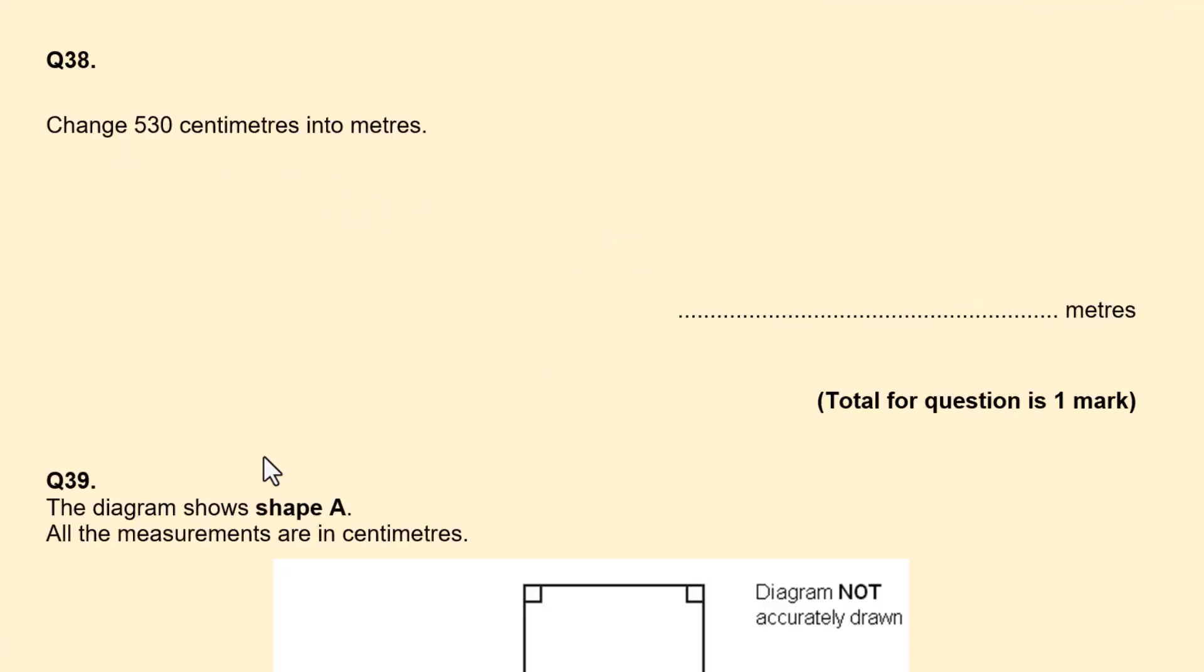Change 530 centimeters into meters. So we know 1 meter is equal to 100 centimeters. So we have to divide 530 by 100 to get into meters. So that'll give us 5.3. 5.3 meters is worth one mark.